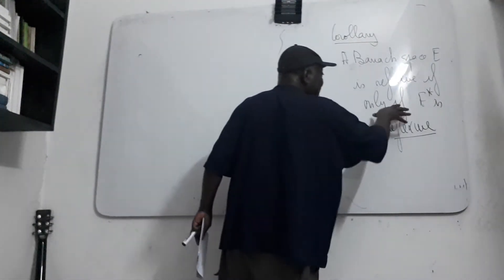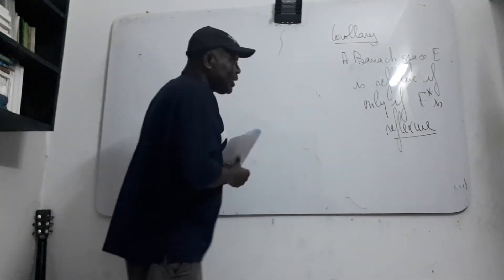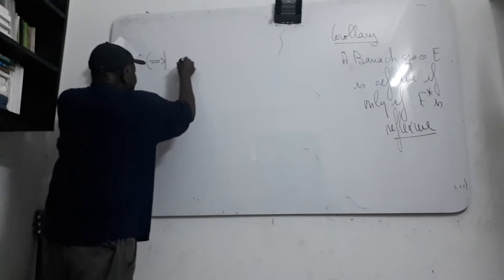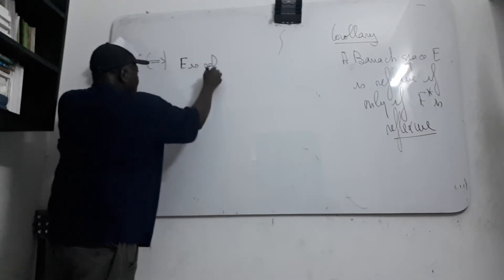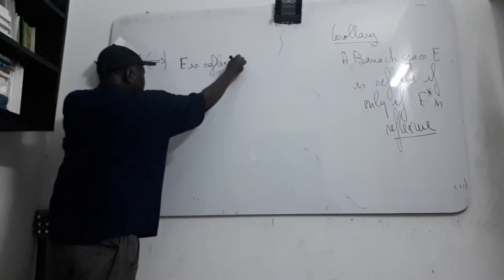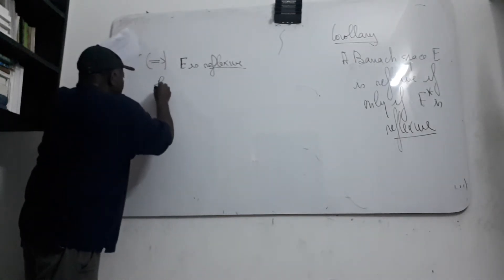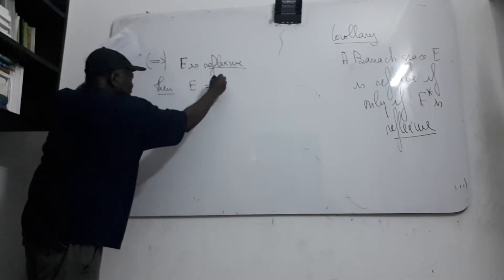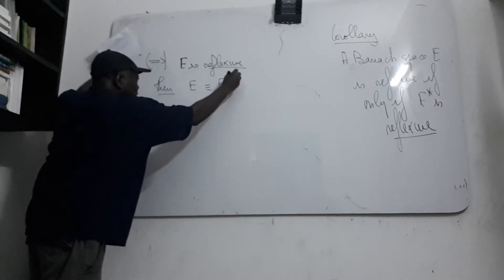So we suppose that E is reflexive, and we suppose that E* is reflexive. Then you can identify E to E**, the bidual of E, by the canonical map G.